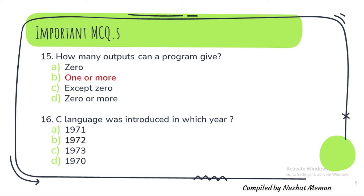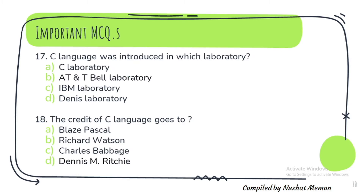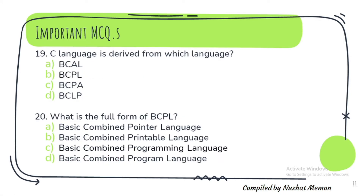Question 16: C language was introduced in which year? It was introduced in 1972. Question 17: C language was introduced in which laboratory? It was introduced in AT&T Bell laboratory. Question 18: The credit of C language goes to Dennis M. Ritchie. Question 19: C language is derived from which language? It is derived from BCPL.